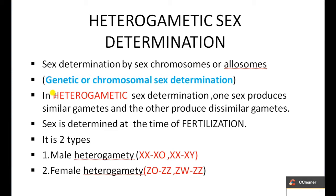Depending upon the nature of sex chromosomes, they may be heterogametic or homogametic. Heterogametic means the two sex chromosomes are different; homogametic means the two sex chromosomes are similar. Depending upon whether the male or female is heterogametic, sex determination is divided into two types: male heterogamity and female heterogamity. In male heterogamity, males produce different types of sperms; in female heterogamity, females produce different types of ova.